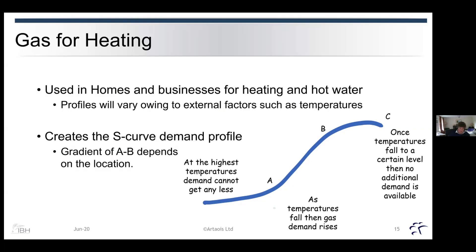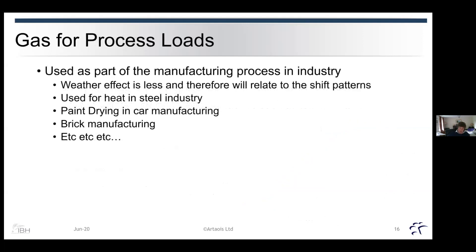In the northern part of northwest Europe and the UK, you may see that gradient be relatively steep compared to more southern parts, such as parts of France. Gas for process load is used as part of the manufacturing process. The weather effect is less, so it's more likely to relate to shift patterns. It can be used as heat in the steel industry, paint drying in car manufacturing, drying for brick manufacturing, and even fertilizer production.